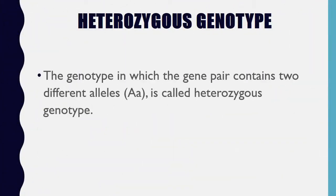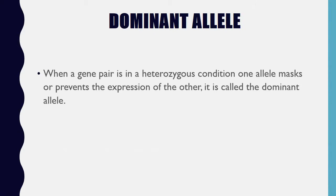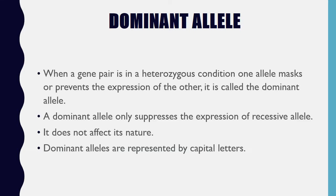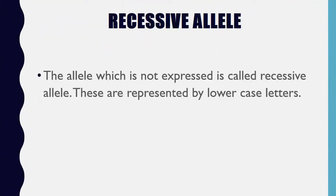Heterozygous genotype: the genotype in which the gene pair contains two different alleles. Dominant allele: when a gene pair is in a heterozygous condition, one allele masks or prevents the expression of the other — it is called the dominant allele. A dominant allele only suppresses the expression of the recessive allele; it does not affect its nature. Dominant alleles are represented by capital letters. Recessive allele: the allele which is not expressed is called the recessive allele. These are represented by lowercase letters.